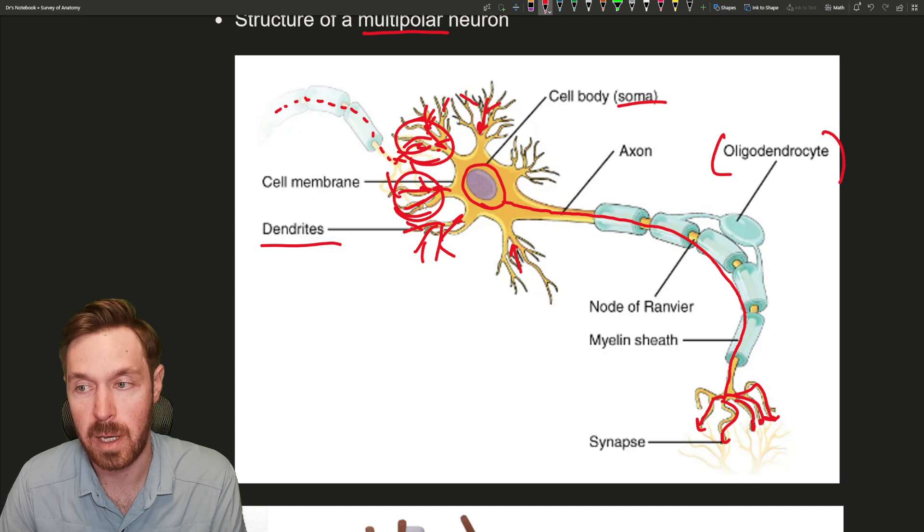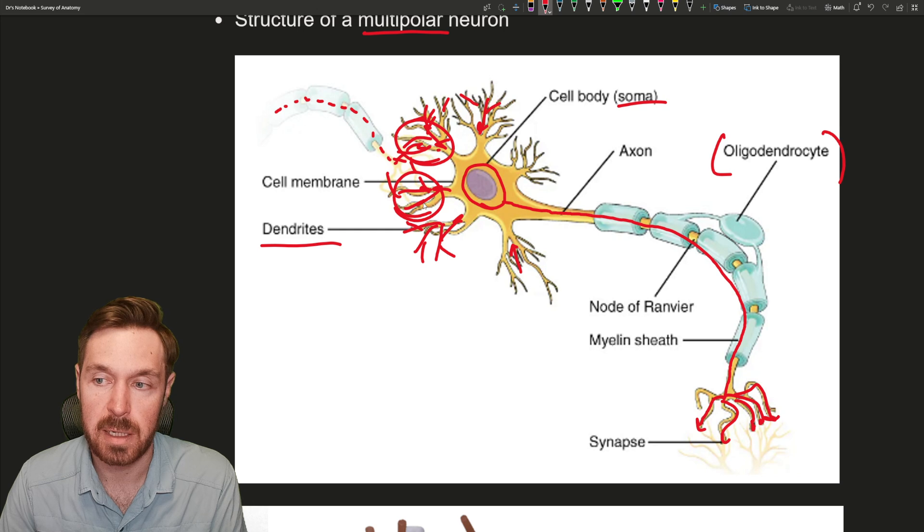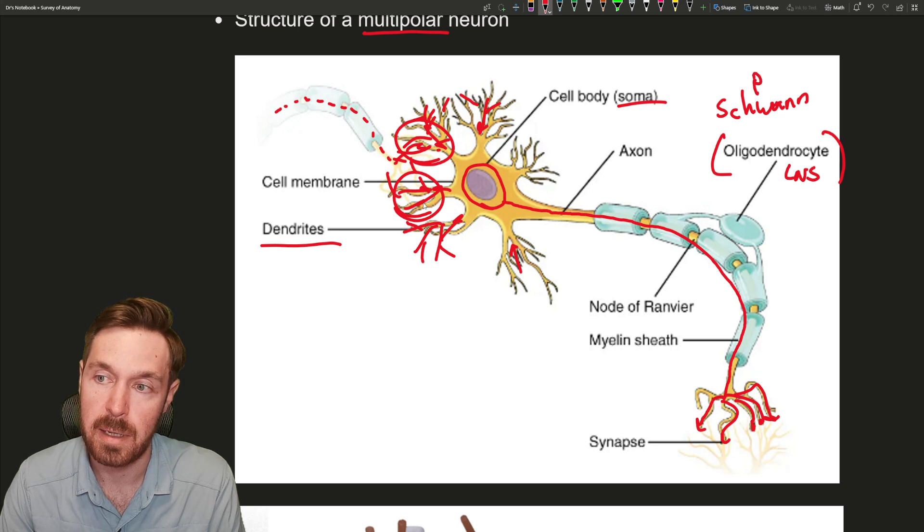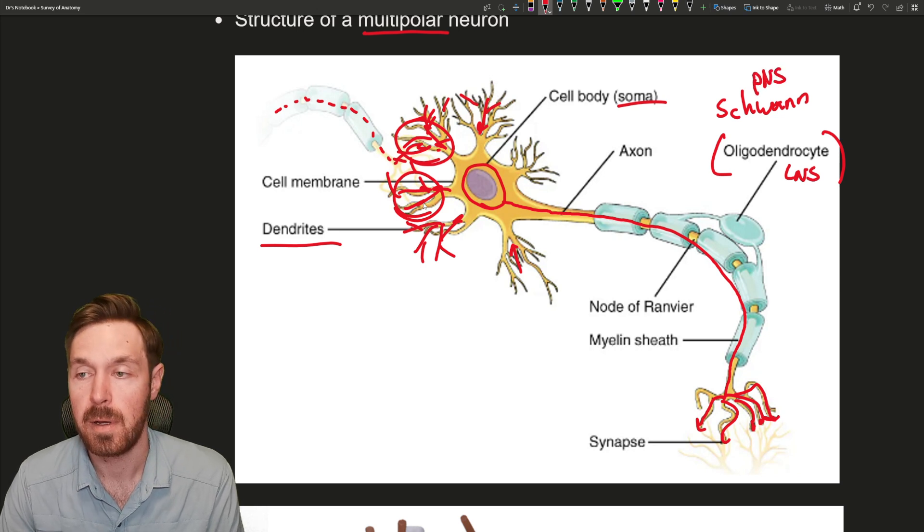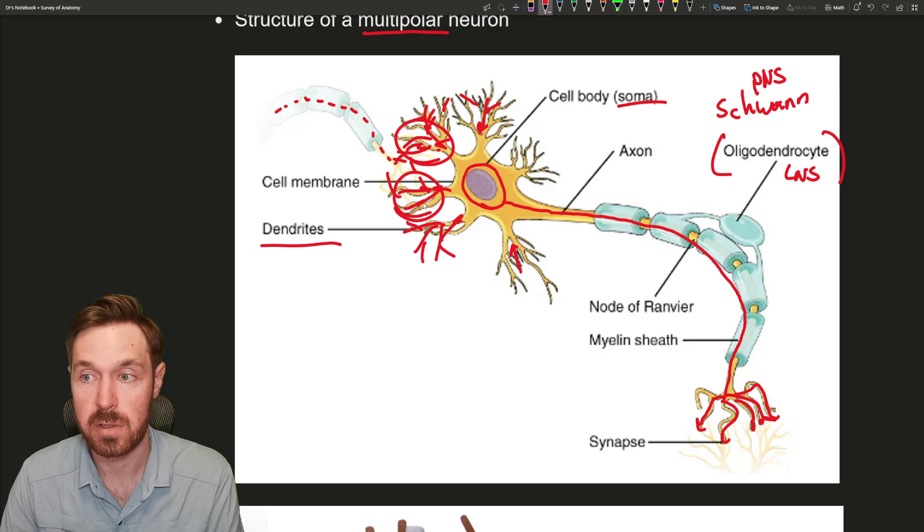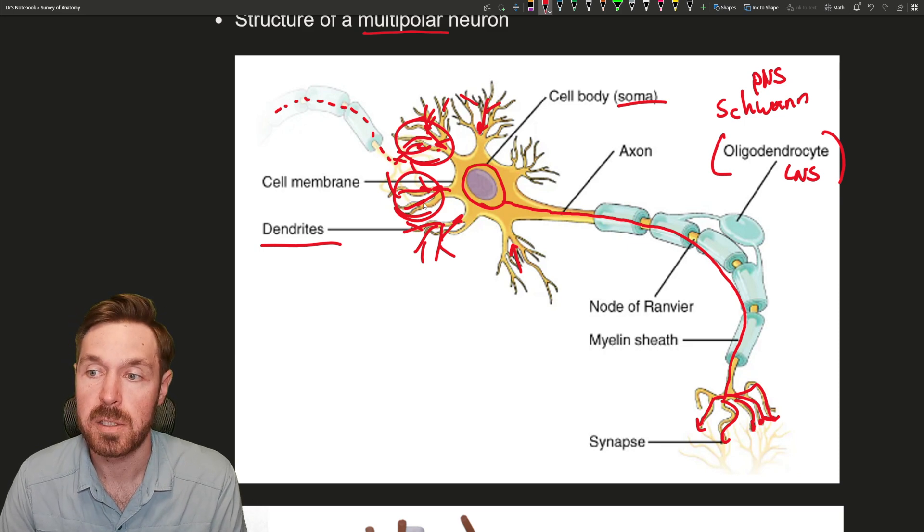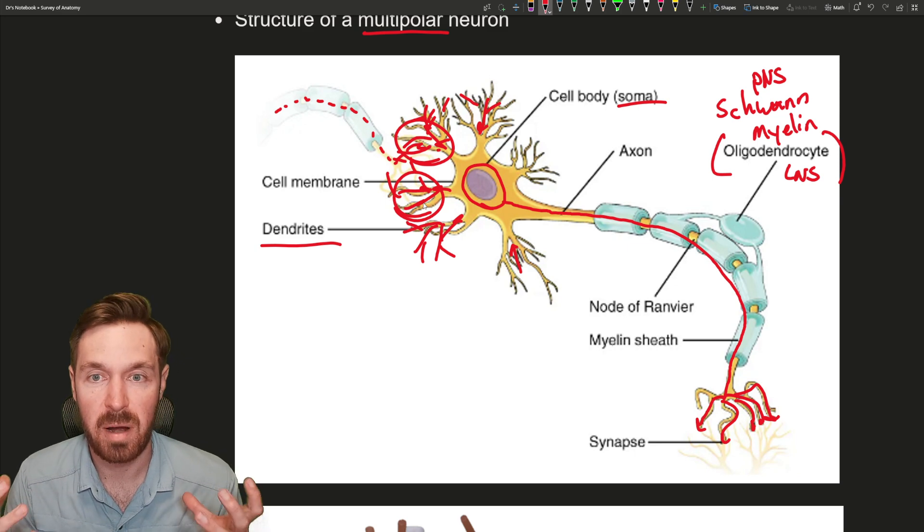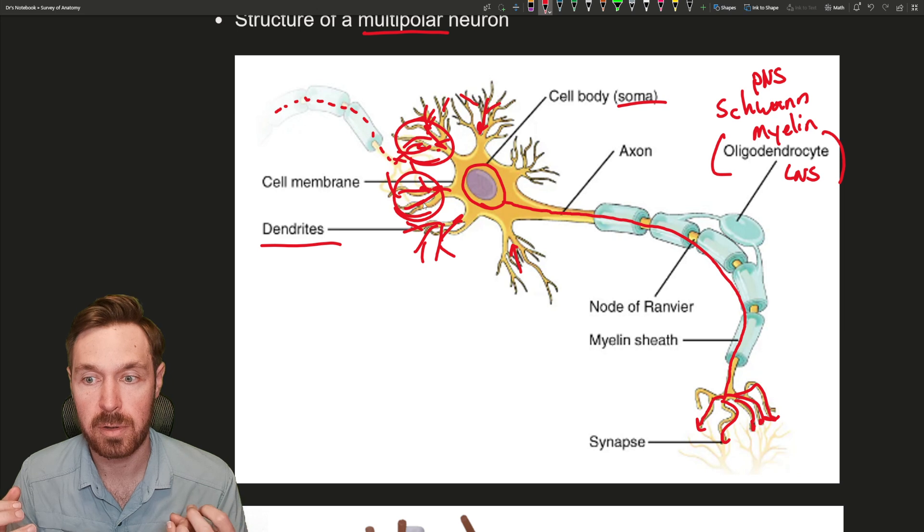Now a few things to talk about here. There's a cell labeled called an oligodendrocyte. The OpenStax book decided to use an oligodendrocyte here rather than something called a Schwann cell. Oligodendrocytes are found in the central nervous system. Schwann cells are found in the peripheral nervous system.